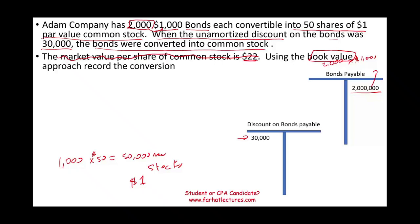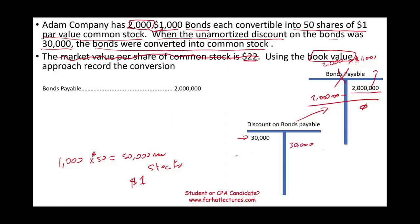To convert, I have to remove the bonds. First, I debit bonds payable $2,000,000 to bring bonds payable down to zero. This discount exists to serve the bonds payable account, so if that account is being eliminated, I have to eliminate the discount — I credit the discount on bonds payable $30,000 to bring that balance to zero. The bonds and their related contra account are now gone.